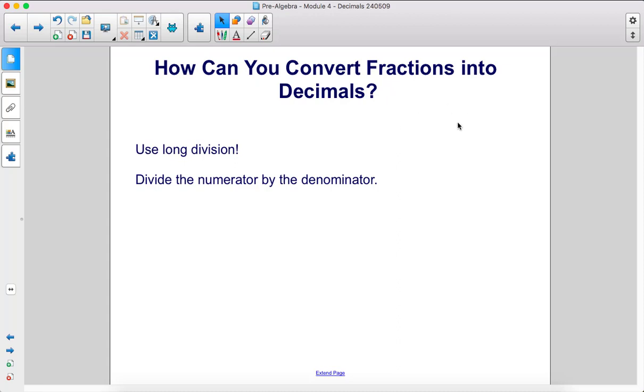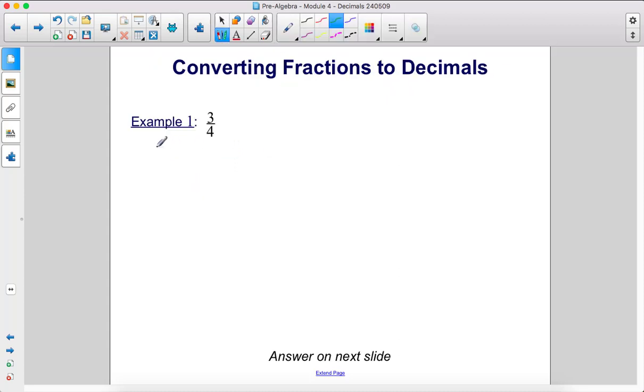To convert fractions into decimals, let's just use long division. Divide the numerator by the denominator. Example 1: 3 fourths. So we're going to divide the numerator by the denominator. Now 4 does not go into 3, so therefore we're going to add a decimal and then a 0.